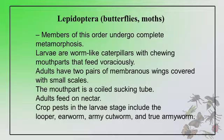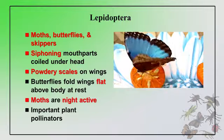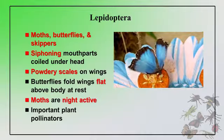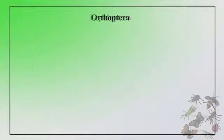Lepidopteran insects: members of this order undergo complete metamorphosis. Larvae are worm-like caterpillars with chewing mouth parts that feed voraciously. Adults have two pairs of membranous wings covered with small scales. The mouth part is a coiled sucking tube, which is an important identifying character of Lepidopteran insects — moths and butterflies. They can be identified by siphoning type of mouth parts and powdery scales on wings. Butterflies fold wings flat above the body at rest, while moths are night-active and important plant pollinators.